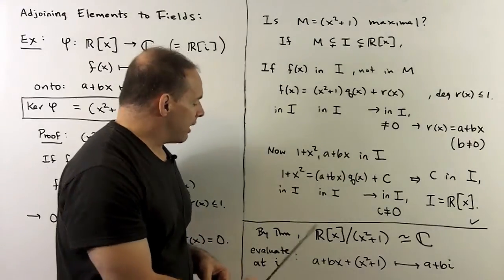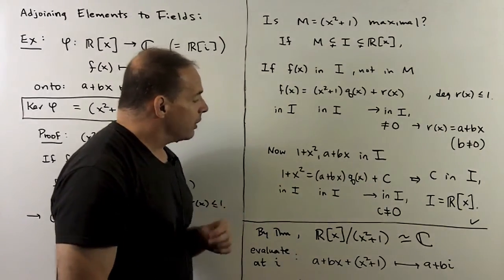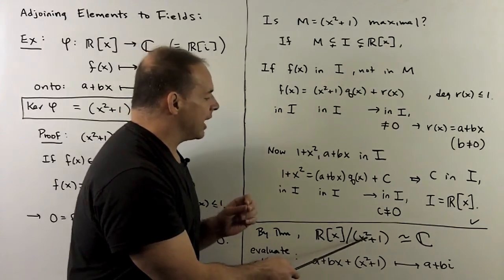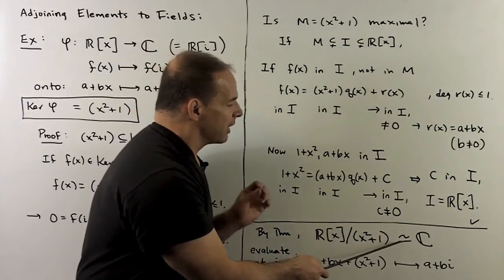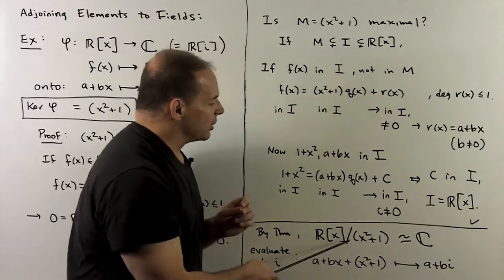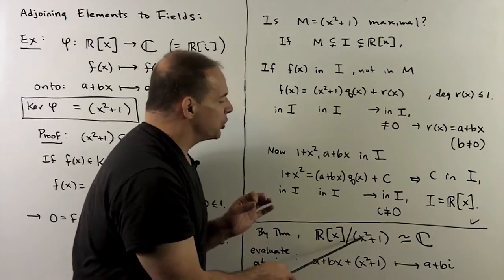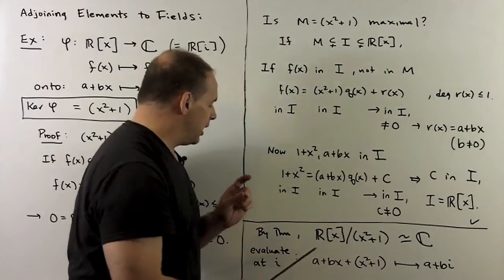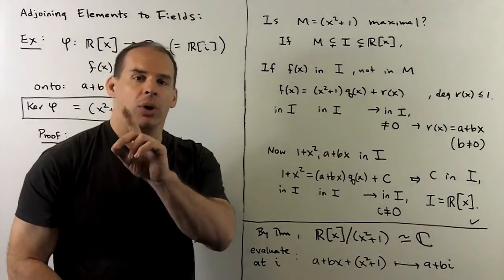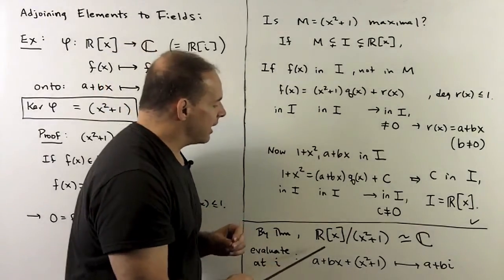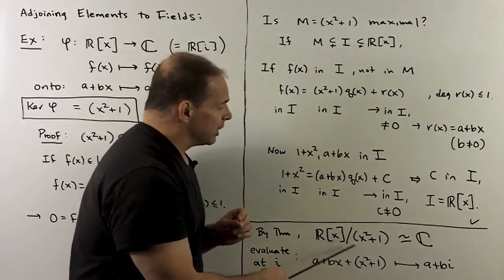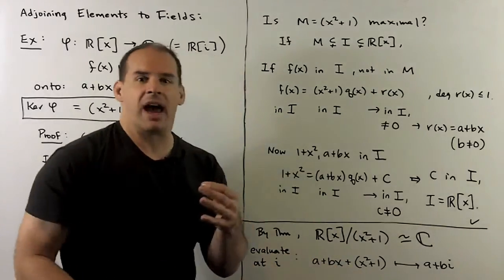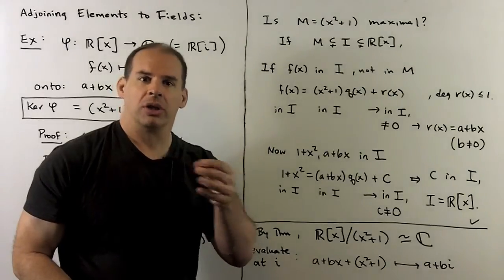Putting everything together: by the first isomorphism theorem, ℝ[X] modded out by (X² + 1) is isomorphic to the complex numbers. Our ideal is maximal, so when we take the quotient, we get a field on the right-hand side. Explicitly, what's happening is we evaluate at i, which kills off the ideal, and we're left with the linear term out in front — that's how the isomorphism works explicitly.